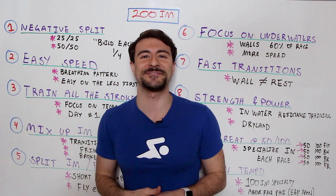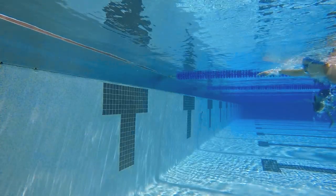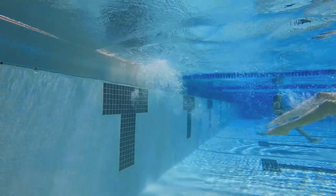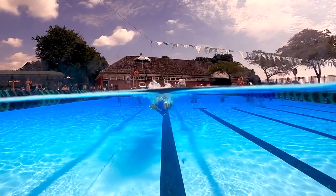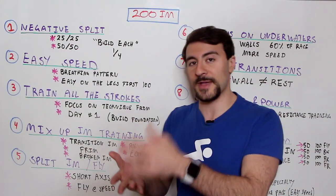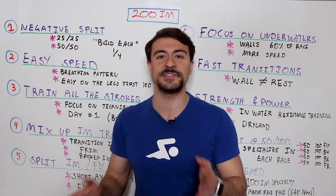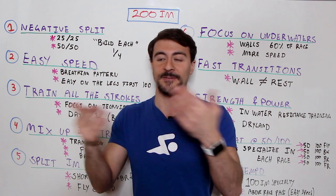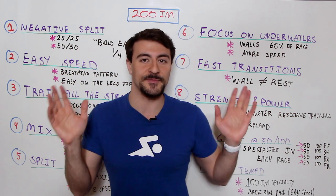Another variation is frim — freestyle IM — where you swap out butterfly and replace it with freestyle. This lets you train at a higher aerobic threshold without exhausting yourself on butterfly repeats, maximizing work on backstroke, breaststroke, and freestyle. Another favorite is broken IM: instead of full 50s of each stroke, you do 25s — essentially two broken 100 IMs. First 50 is fly-back, second 50 is breast-free, then repeat across multiple rounds.